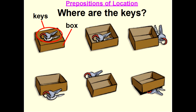Now it's time to learn about prepositions of location. These are keys and this is a box. Where are the keys? The keys are on the box. Where are the keys? The keys are in the box.